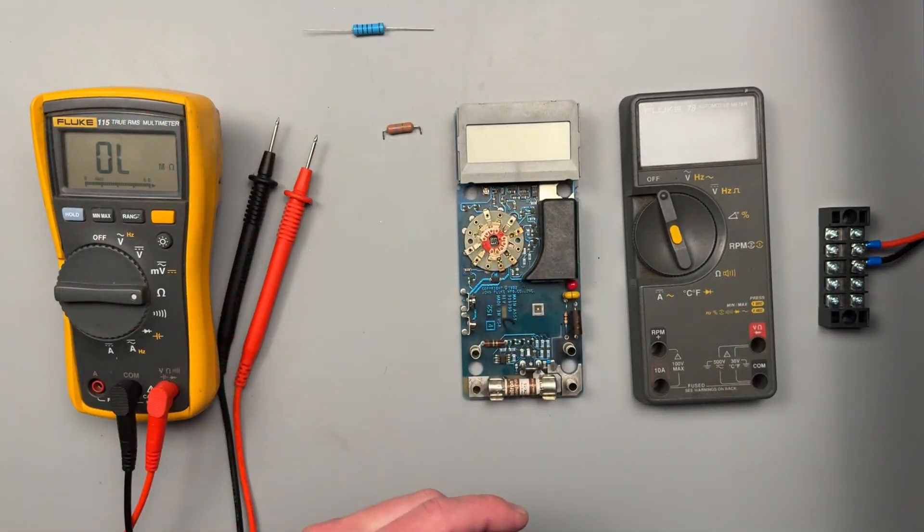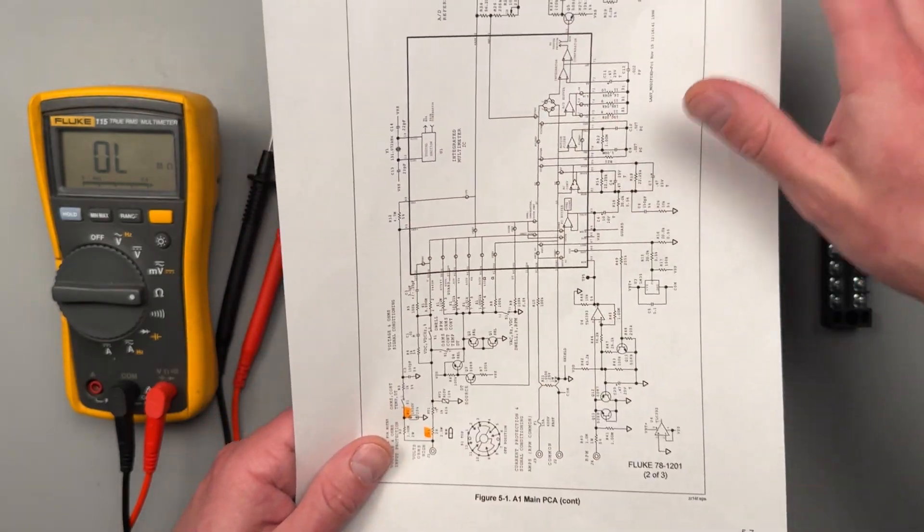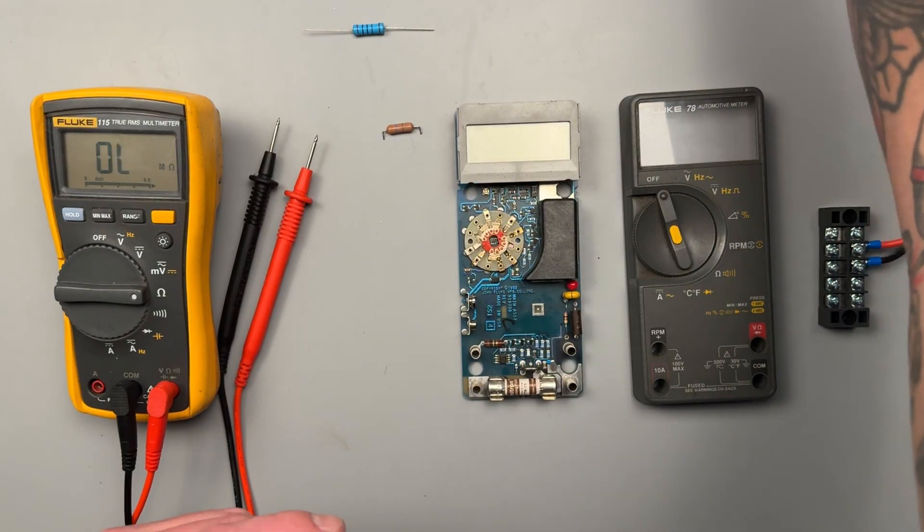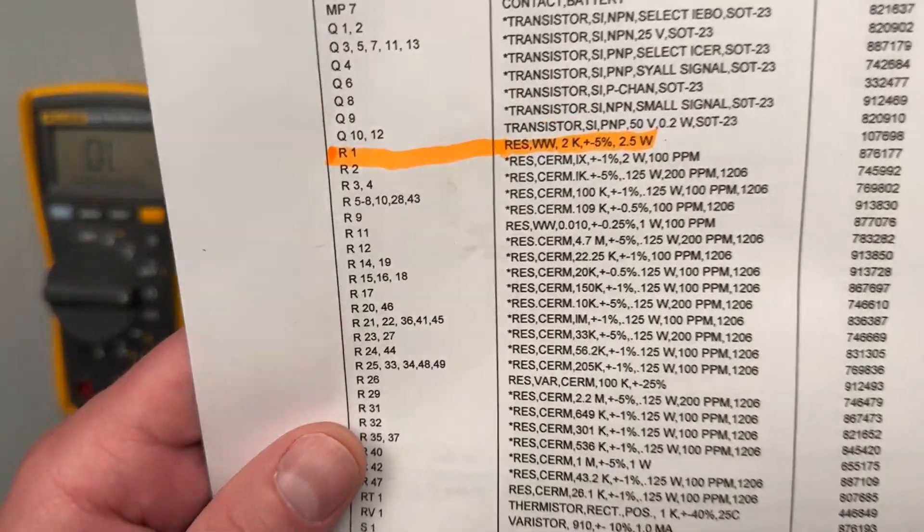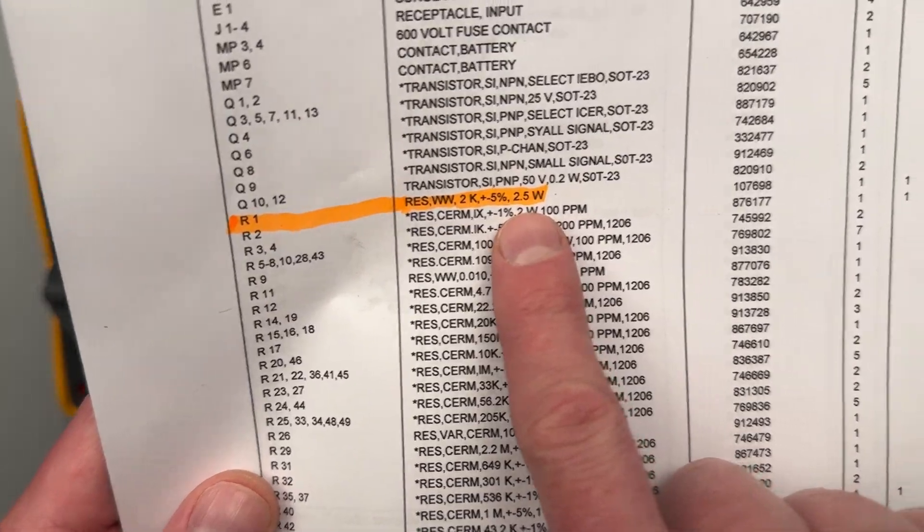If you do have an older Fluke meter like this that you're looking to repair, go on their site. They should have a schematic. The thing that I did run into, as we can see on our BOM, R1 resistor one on our BOM, it's a 2k plus or minus five percent, two and a half watt.